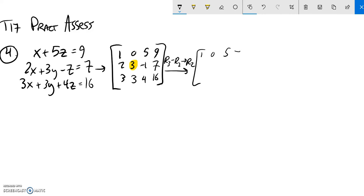So 1, 0, 5, 9. Row 1, it will be unchanged. Row 3 is going to stay unchanged as well. 3, 3, 4, 16.